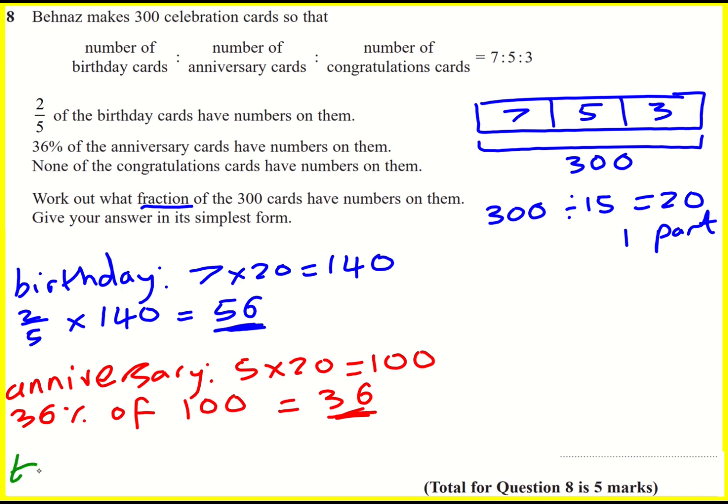So the total is 56 plus 36. Remember, there's no congratulations cards with numbers on. So we get 92. It's got one more thing to do, and that is to work out, remember, the fraction. We're told that at the start. So the fraction is 92 over 300.